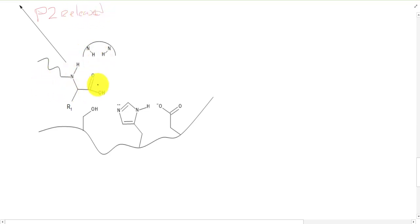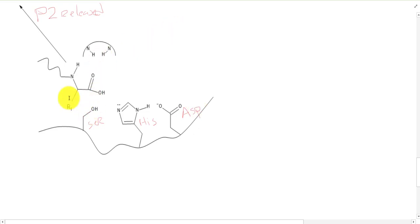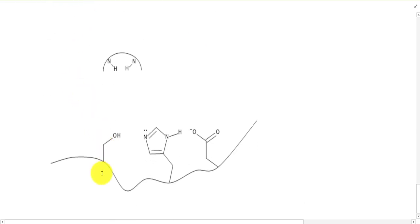We have liberated product two that will float away into the solution. And we have a regenerated serine, a regenerated histidine, and aspartic acid still in our active site. These are in the same charge states as they were originally. And if we look at this, this is exactly where we started. So we'll be ready for another substrate binding. And then we can repeat this.